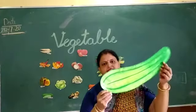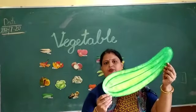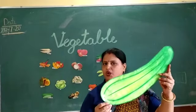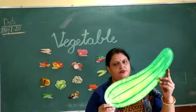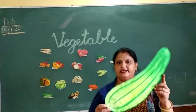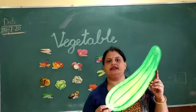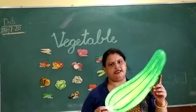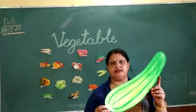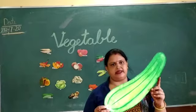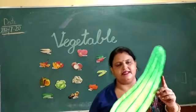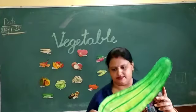Which vegetable is this? Cucumber. Which vegetable is this? Cucumber. Cucumber ko Hindi mein kehte hain Kheera. Aur isse hum raita mein use karte hain, salad mein use karte hain. Which vegetable is this? Cucumber.